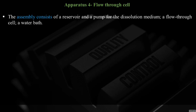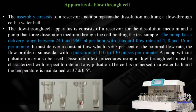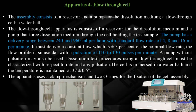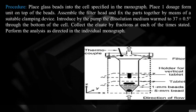Apparatus 4 — Flow-Through Cell: consists of a reservoir and pump for dissolution medium, a flow-through cell, and a water bath. Four different cell types are available. The pump forces dissolution medium through the cell holding the test sample, with delivery range of 240 to 960 mL/hr and standard flow rates of 4, 8, and 16 mL/min. Flow must be constant within ±5% of nominal flow rate. Flow is sinusoidal with pulsation of 110 to 130 pulses per minute. Temperature maintained at 37 ± 0.5°C.